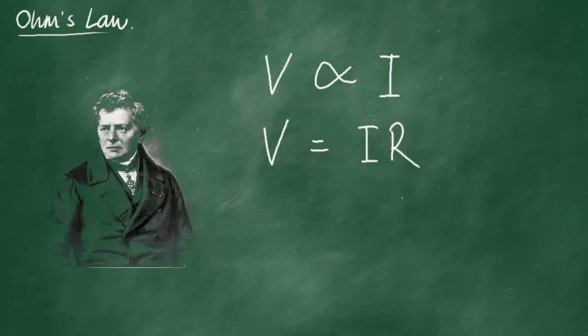So here we have Ohm's Law. The potential difference is equal to the current times the resistance. V equals IR.